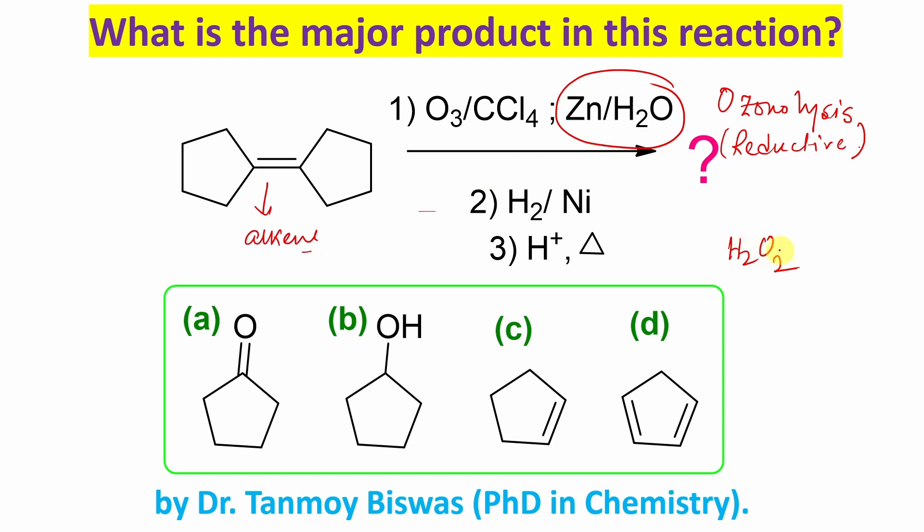So in order to prevent that, this hydrogen peroxide is quenched by zinc water. Now in some cases, some examples you may see that instead of zinc water, actually hydrogen peroxide is given. That you need to understand. That's oxidizing ozonolysis. So in that case, carboxylic acid will be the product. But here it is not given, so it will not go.